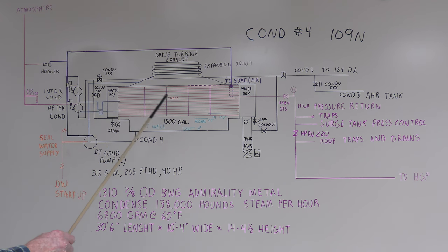The tubes - there's 1,310, 7/8 inch OD BWG, they're Admiralty metal. It required 6,800 gallons a minute of 60 degree water for condensing the steam. Your raw water service came in, went down the bottom to the other water box, then it reversed and came back to the top of the tubes and then to the raw water return.